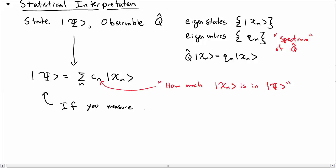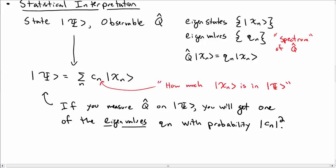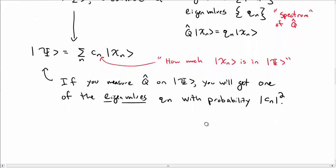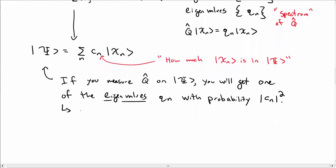In particular, the interpretation is that if we measure q hat on the state capital psi, you will get one of the eigenvalues of q hat, which it could be q n. And you'll get that with a probability absolute value of c n squared. So you get one of those values when you take a measurement. You get one of those eigenvalues, q n.